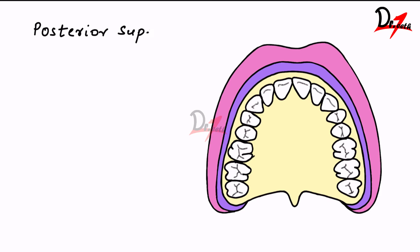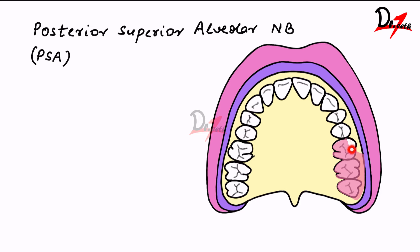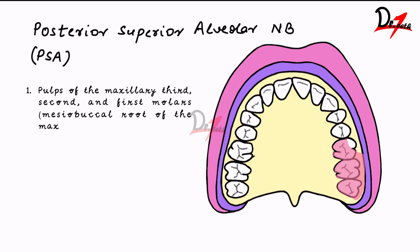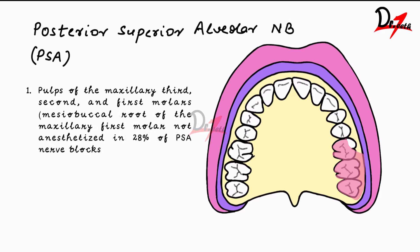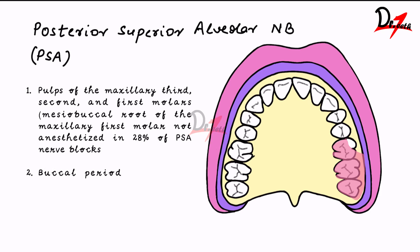The second nerve block is the posterior superior alveolar nerve block, that is the PSA nerve block. It includes all the molars except the mesobuccal root of the first molar, and the overlying structures like the buccal periodontium and mucous membrane. The pulps of the maxillary third, second, and first molar are covered, however the mesobuccal root of the maxillary first molar is not anesthetized in 28% of PSA nerve blocks. It also covers the buccal periodontium and bone overlying these teeth.